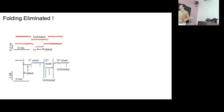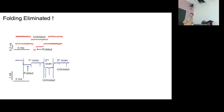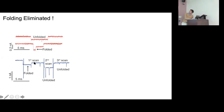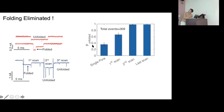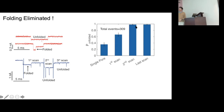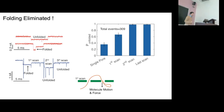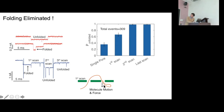Folding is a big problem in nanopore work — only 30 percent linear translocation in a 10 nm pore. This technology fixes that completely. Folds can be identified by the double level in the blockade. Looking at folds present in first scan, second scan, third scan: first scan 40 percent unfolded, second scan 70 percent, third scan 100 percent unfolded. That's very important because I can use 100 percent of events.